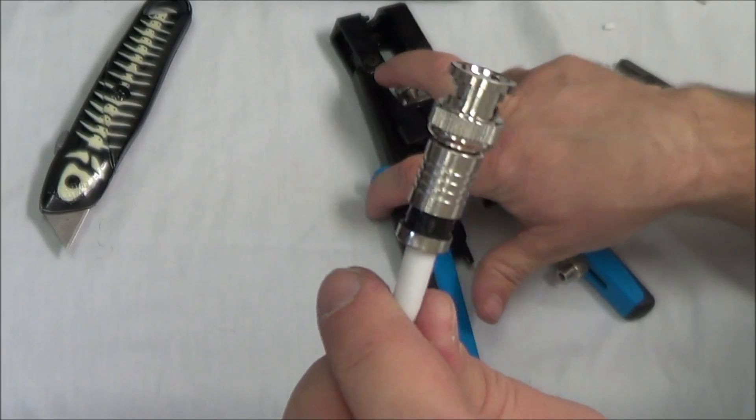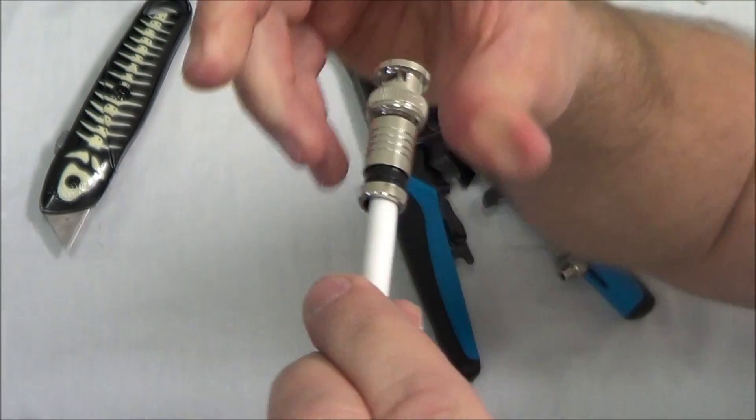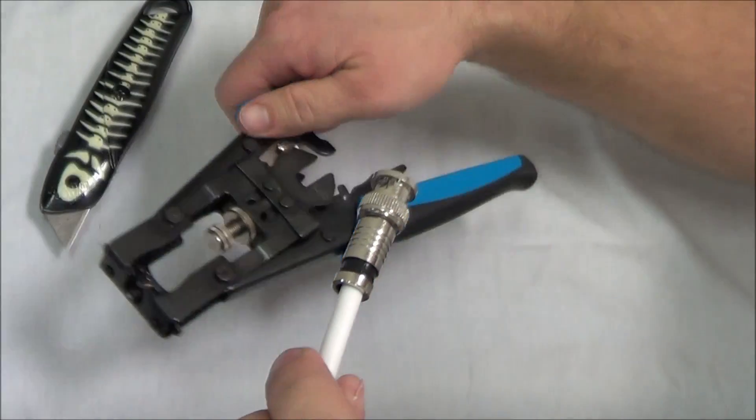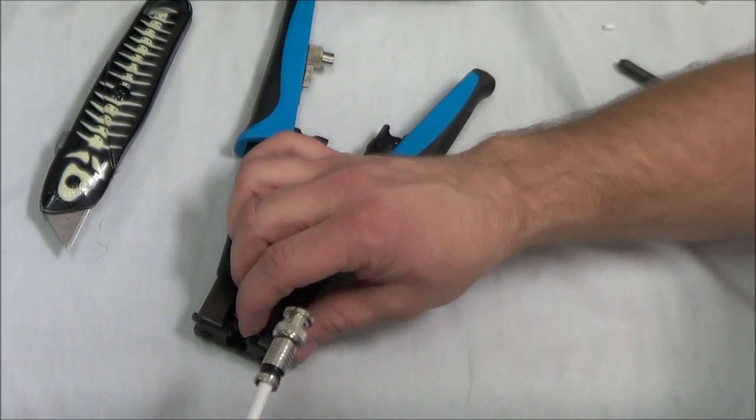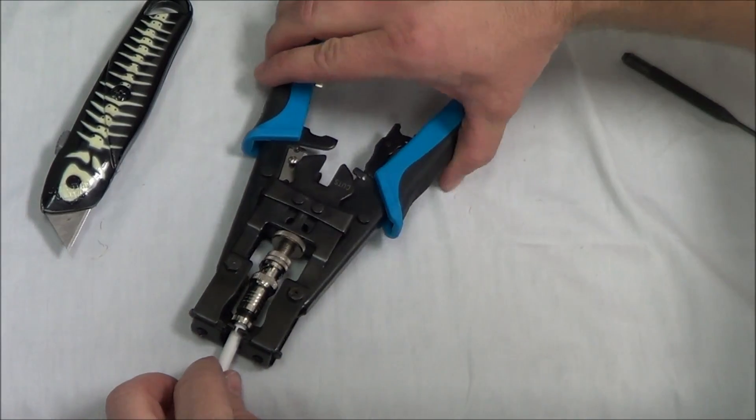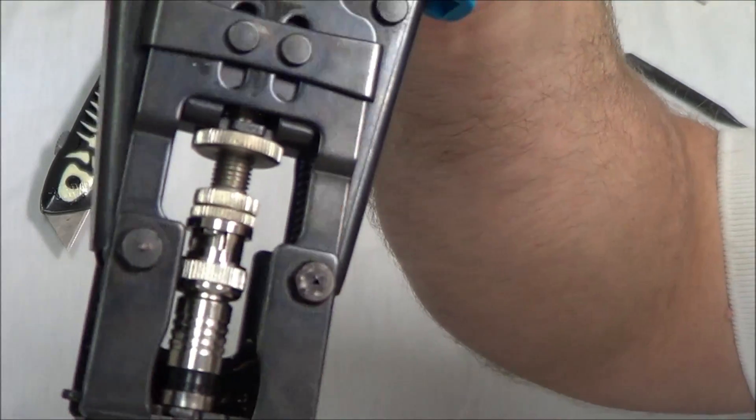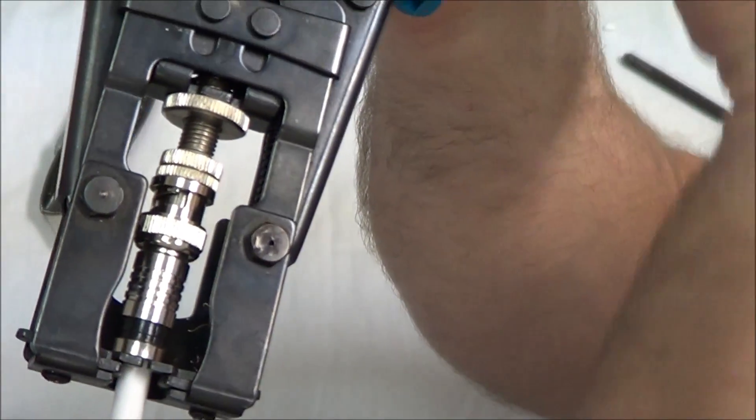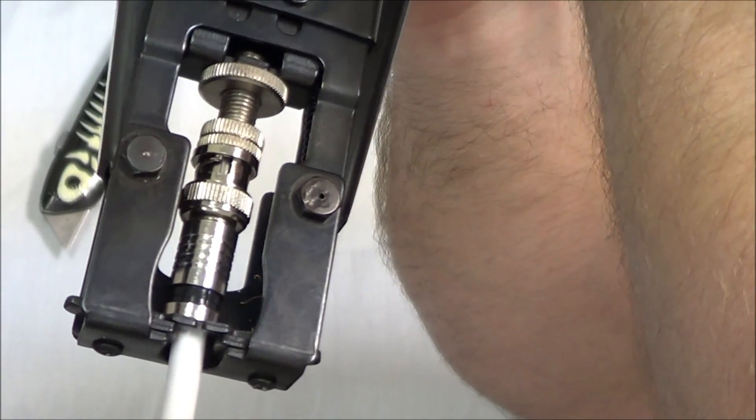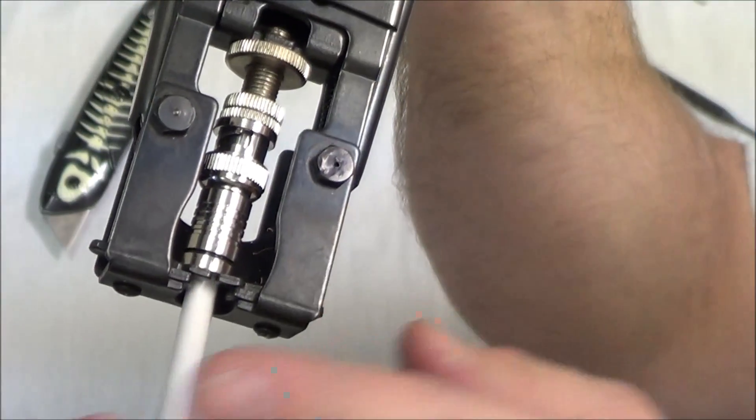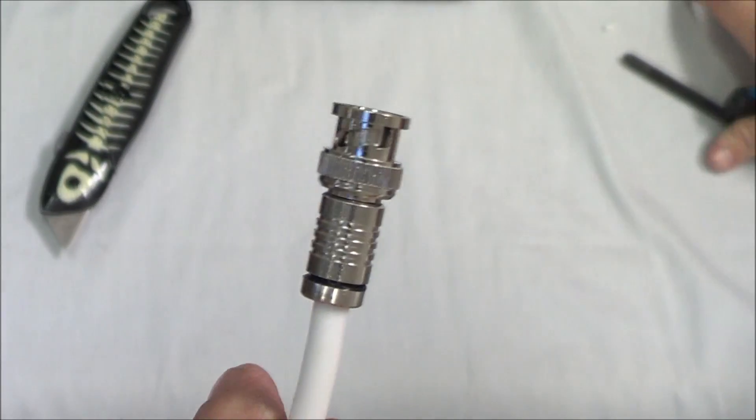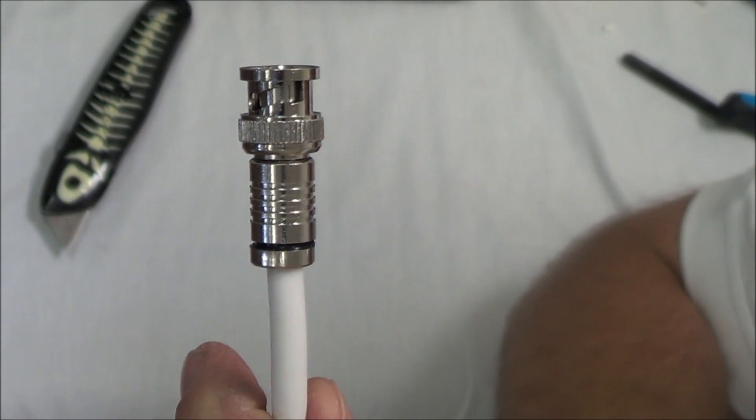Now all we have to do is take our crimping tool and compress this together. Set it in there like that. We're going to squeeze the handle and it's going to compress this down and lock it in there. And there you have it.